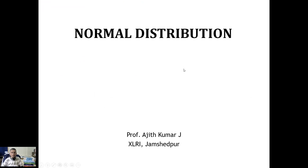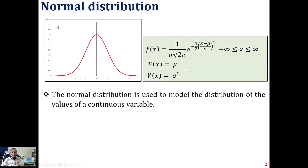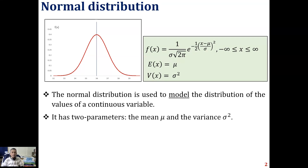The normal distribution is used to model the distribution of the values of a continuous variable. It has two parameters: the mean mu and the variance sigma squared.